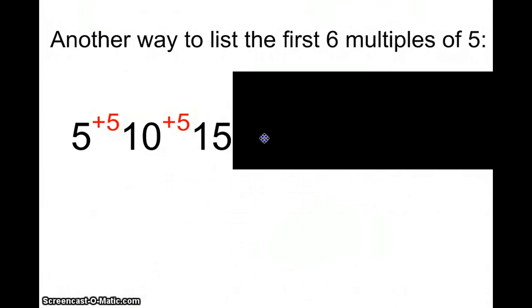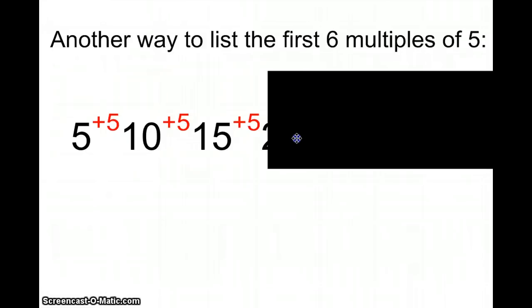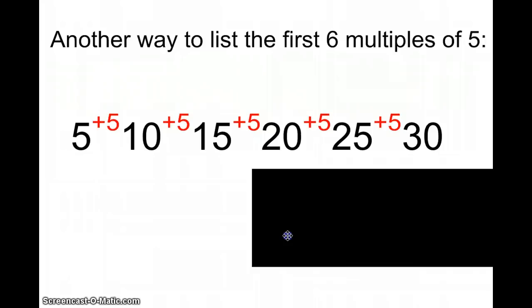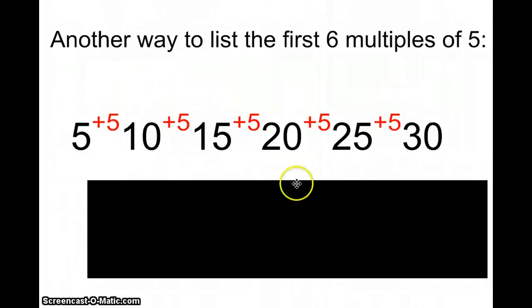To get the fourth multiple, I would add another 5, and 15 plus 5 equals 20. I would keep doing the same thing all the way until I got to 30. So if you look, 1, 2, 3, 4, 5, 6 black numbers, those represent the first six multiples for the number 5.